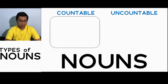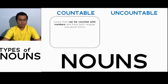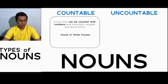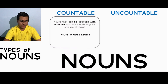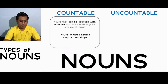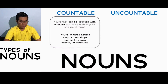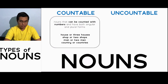Next, we have countable and uncountable nouns. For countable nouns, they are nouns that can be counted with numbers and have both singular and plural forms. For example, you have house or three houses, shop or two shops, man or two men, and country or countries. Even without a numeral, you can still count them.